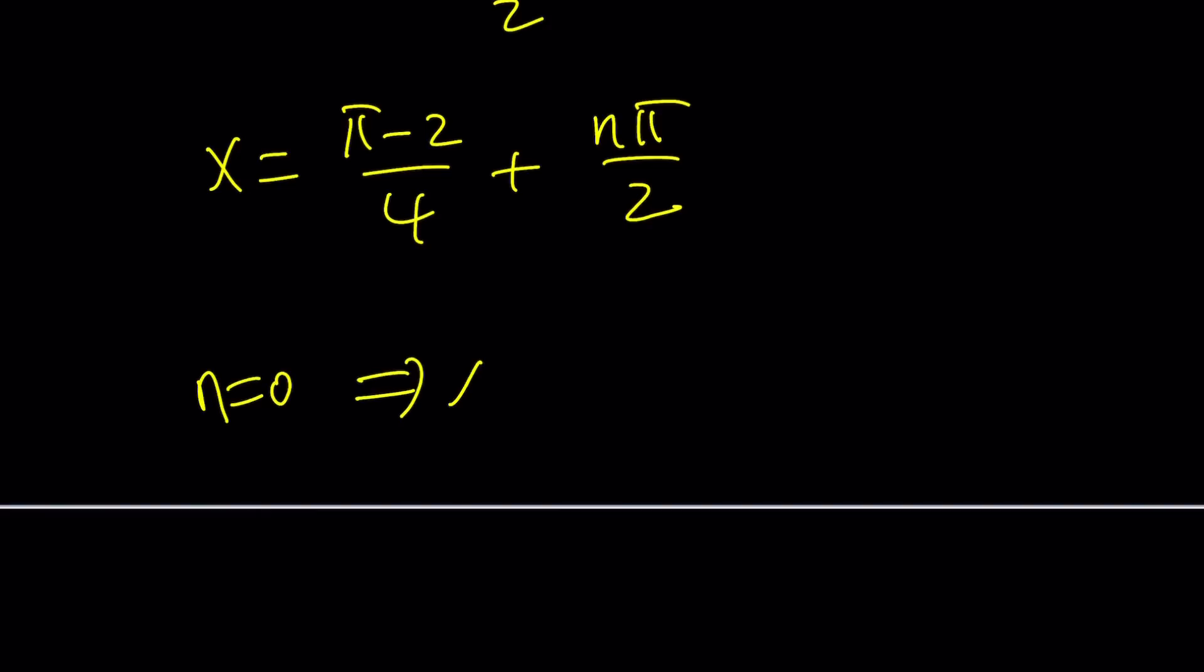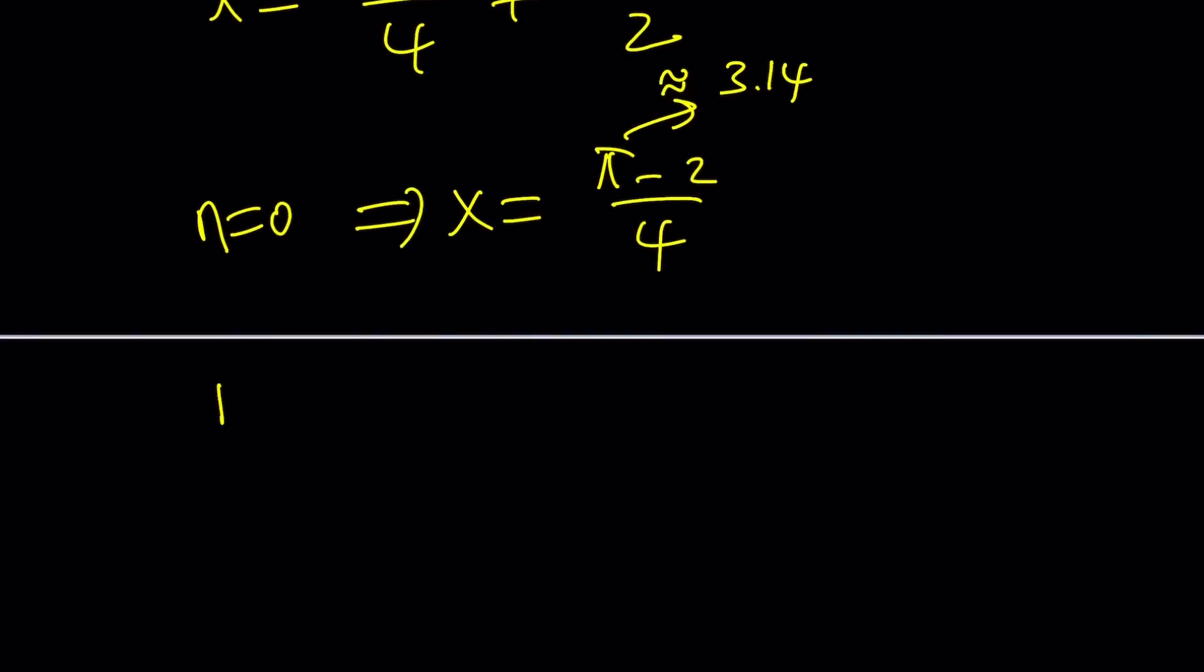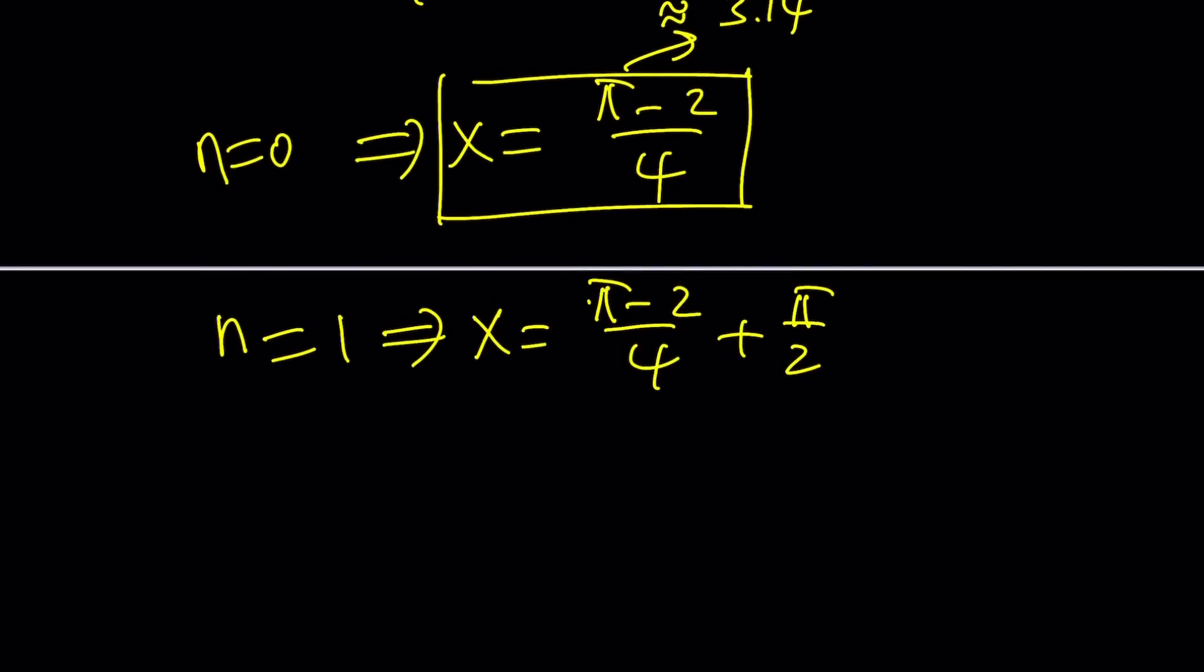For example, if n is equal to 0, x is equal to pi minus 2 over 4. So, if you think about pi is about 3.14, roughly, then you're going to get 1.14 divided by 4. You're going to get something like 0.7 something. It's a decimal, but you've got to remember, it's in radians. That's a solution to our equation. n equals 1 gives us x equals pi minus 2 over 4 plus pi over 2. 2 pi plus pi is going to be 3 pi minus 2 over 4. So, you can kind of get a pattern from here.